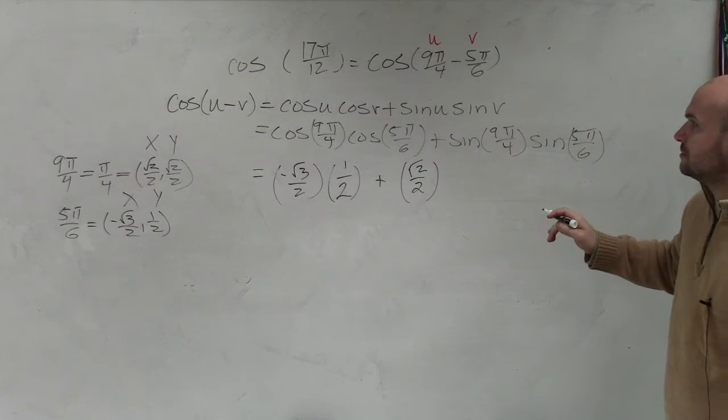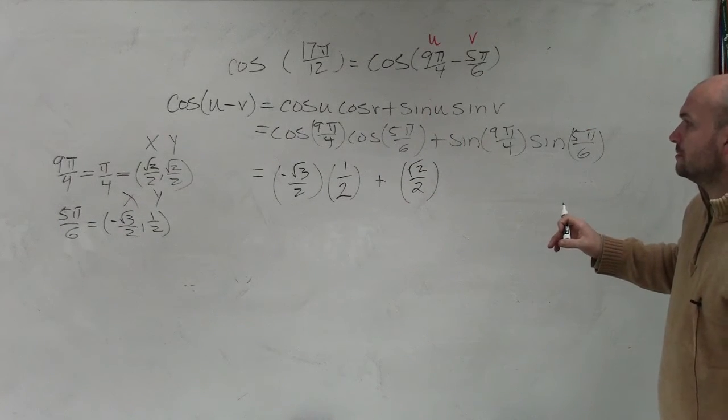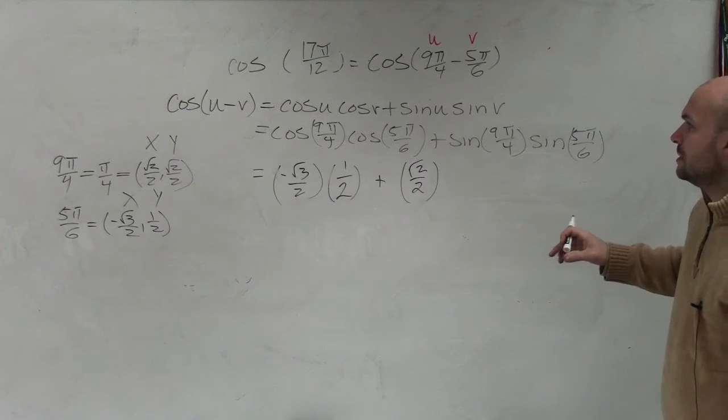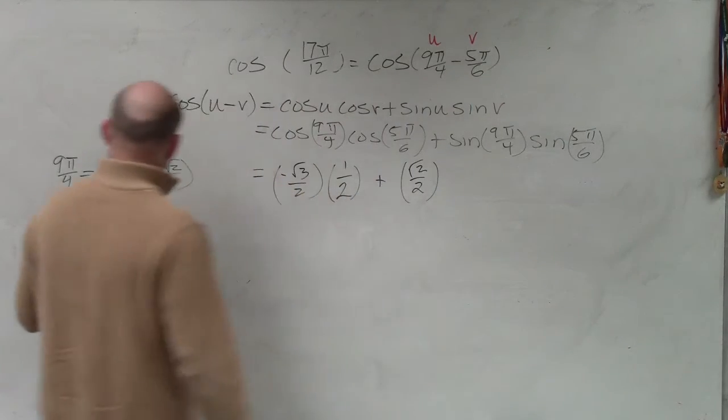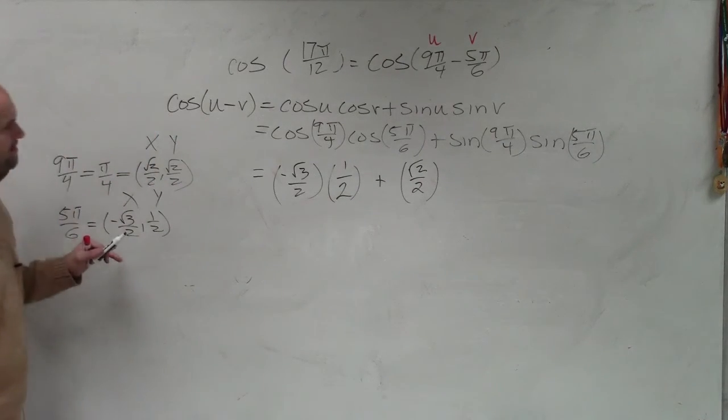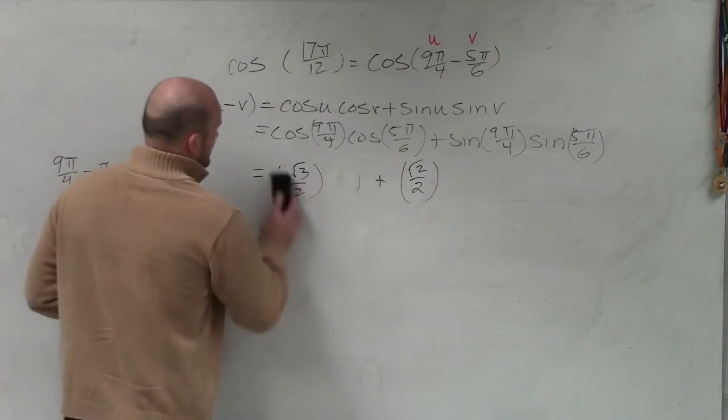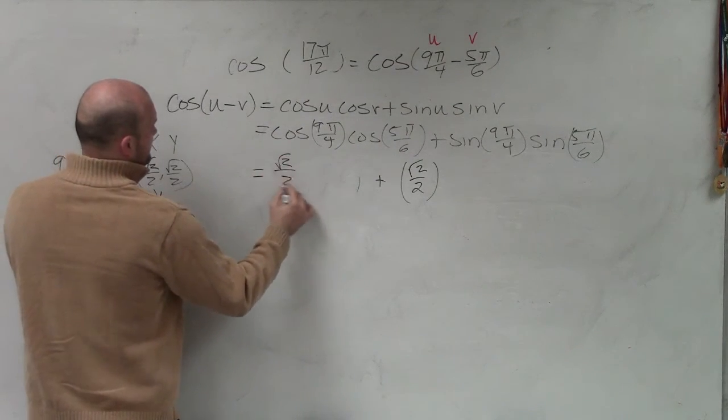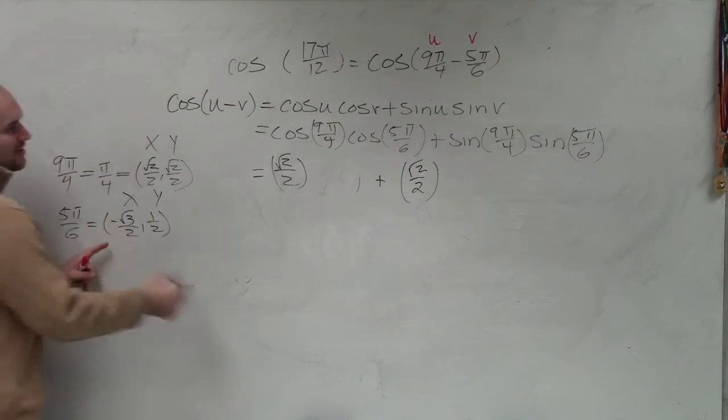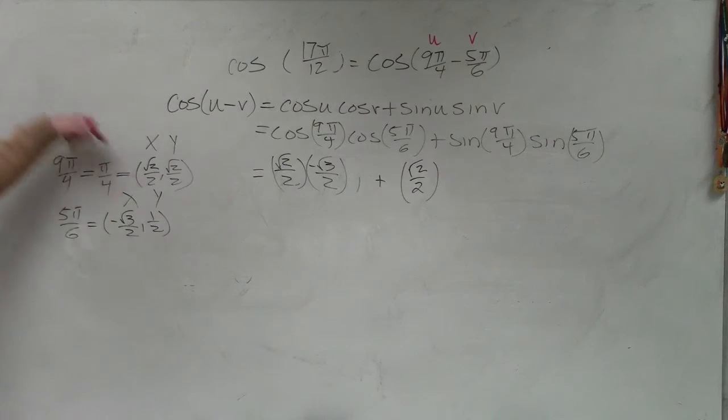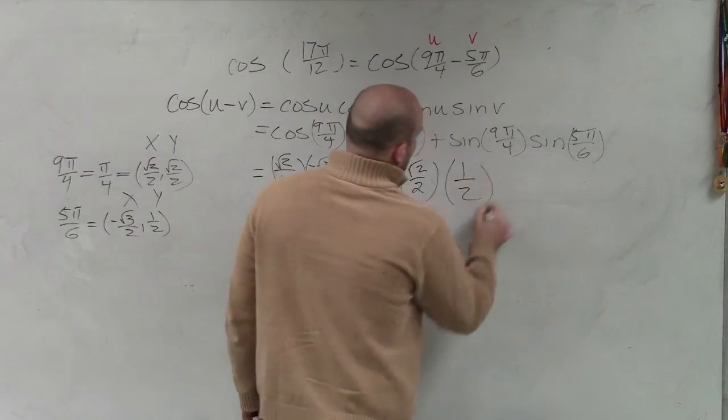So the sine, in this case, is now going to be for 9π over 4, which is square root of 2 over 2. Wait, you took the y-coordinate. Oh, I looked at 5π over 6. Well, I see what you're doing. Let's write this right. So 9π over 4 is square root of 2 over 2, right? Thank you. The sine of 9π over 4 is square root of 2 over 2, and the sine of 5π over 6 is 1 half. Yes, thank you very much.